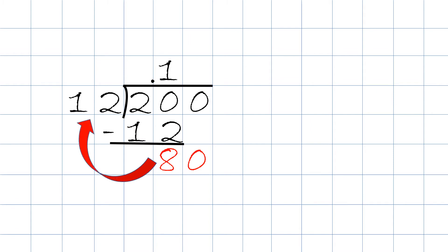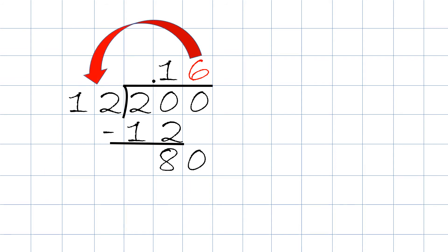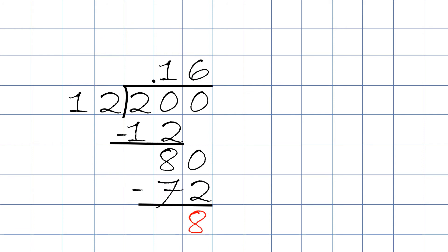We take 80 divided by 12, and the answer will be 6 — 12 goes into 80 six times. 6 times 12 will be 72. We write the 72 underneath the 80 and then we subtract. 80 minus 72 will be 8. Since we cannot divide 8 by 12, we have to add another 0 and bring it straight down, giving us 80 again.